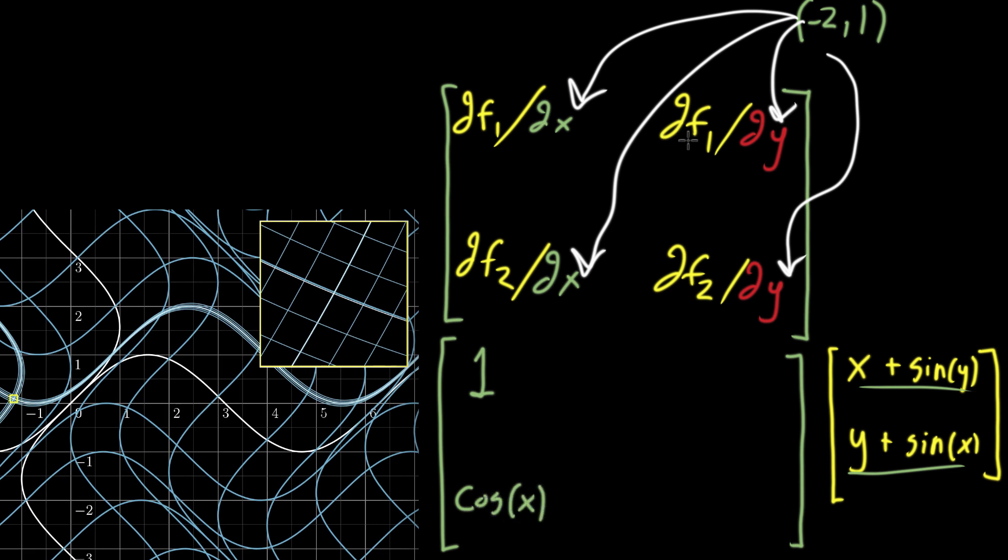And then up here, we're taking the partial derivative with respect to y of the first component, that upper one here. And for that, you know, partial derivative of x with respect to y is 0. And partial derivative of sine of y with respect to y is cosine of y.